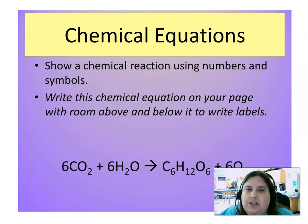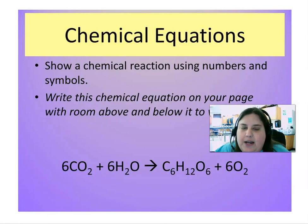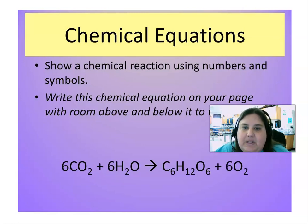A chemical equation shows a chemical reaction using numbers and symbols. Go ahead and write the chemical equation on the screen: 6CO2 plus 6H2O yields C6H12O6 plus 6O2. This is the chemical equation for photosynthesis — you should have looked at this equation last year in seventh grade, so you should be pretty familiar with it. We're going to use this equation to label the different parts of an equation.